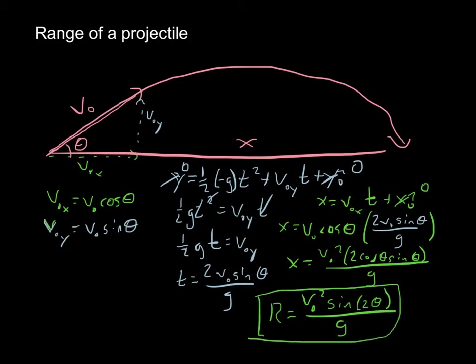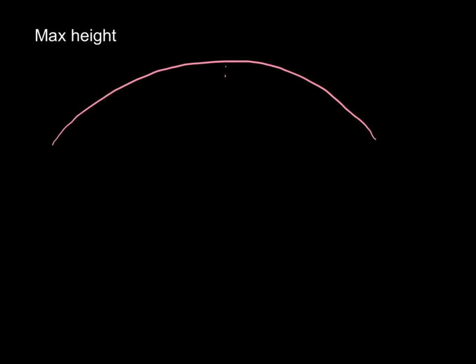Anytime we're launching a projectile from zero height and it lands at zero height, this equation immediately tells us how far it went. If you know the initial speed and the launch angle, you can immediately find the range — a very useful equation. Now let's cover maximum height of a projectile. If a projectile follows its arc, I want to know what its maximum height above the ground was.